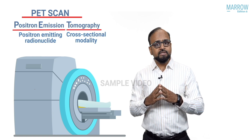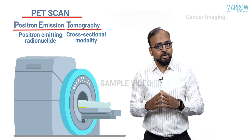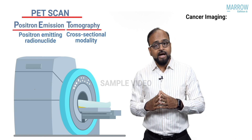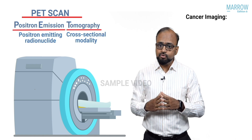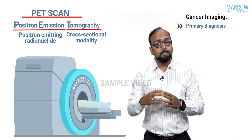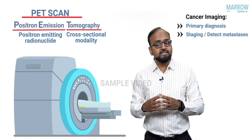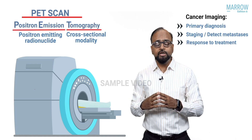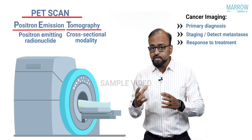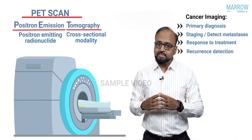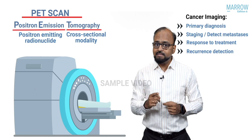Let us quickly discuss the important applications of PET scan. The most important application is cancer imaging — anything and everything about cancer. PET scan is used for diagnosis of the primary tumor, staging, looking for distant metastasis, assessing response to treatment, and also looking for recurrence after the patient has completed treatment.